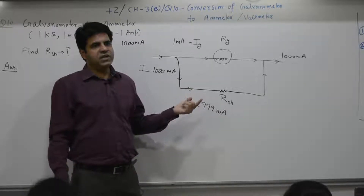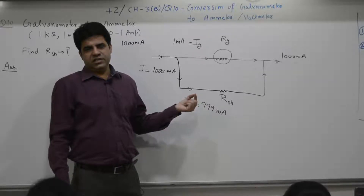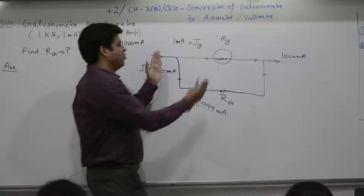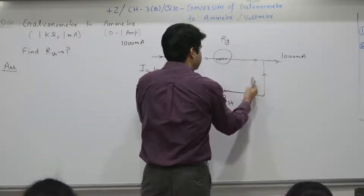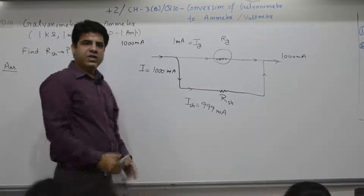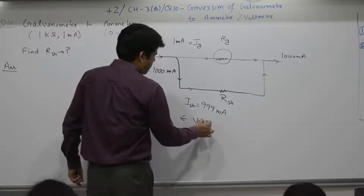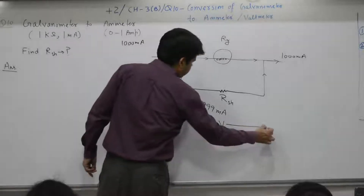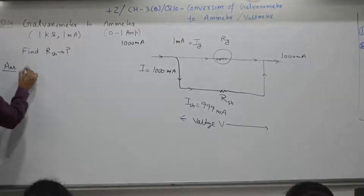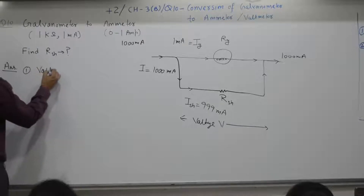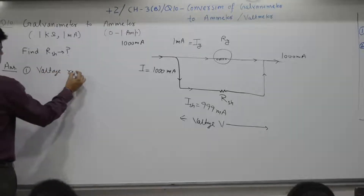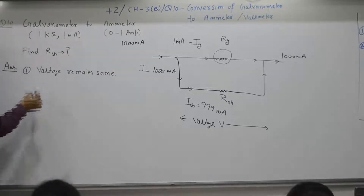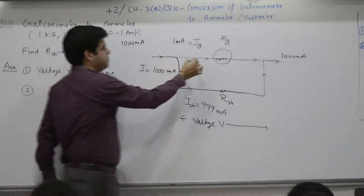The numerical calculation uses 10th class concepts. Voltage across the two parallel branches remains the same. So the working principle is: voltage V remains the same because they are in parallel. Applying Ohm's law to find r_sh.